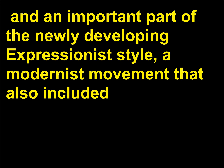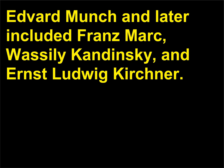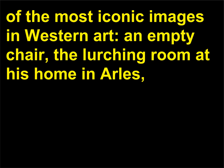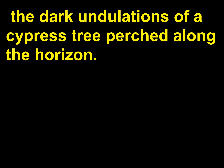His work was an important part of the newly developing Expressionist style, a modernist movement that also included Edvard Munch and later Franz Marc, Vasily Kandinsky, and Ernst Ludwig Kirchner. Van Gogh was active for a mere 10 years, and during that time he produced some of the most iconic images in Western art — an empty chair, the lurching room at his home in Arles, the dark undulations of a cypress tree perched along the horizon.